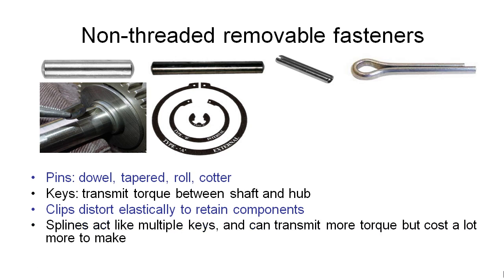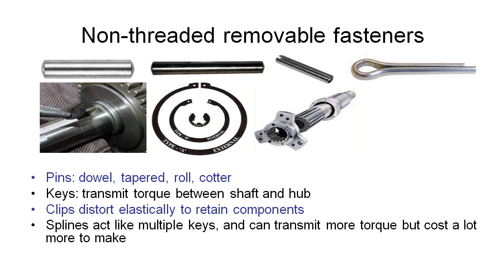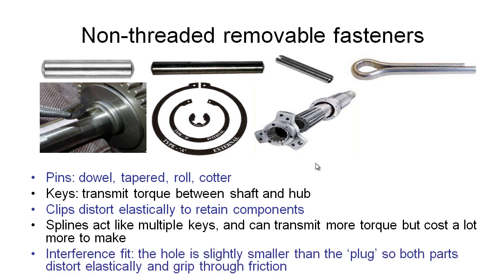If we really need to transmit a lot of torque beyond what a key or pin can provide, we use a spline. A spline acts like many keys acting simultaneously around the diameter of the shaft, with matching slots on the mating part. They slide together and are an extremely effective and efficient way of transmitting torque. However, the amount of machining required makes them more expensive, so we only use them when necessary — commonly in gearboxes or differentials.